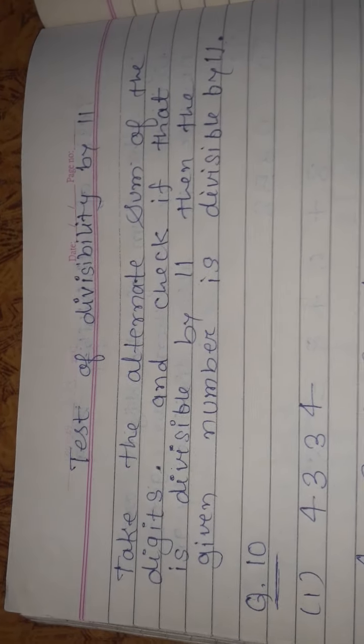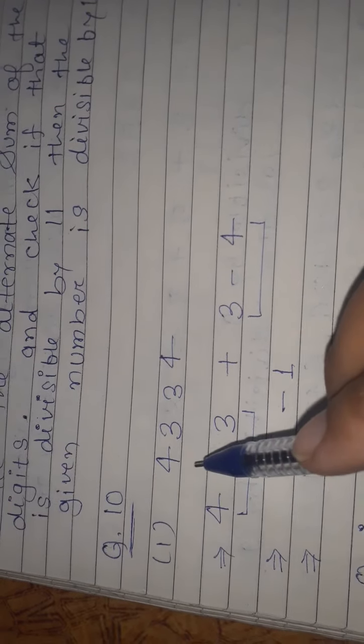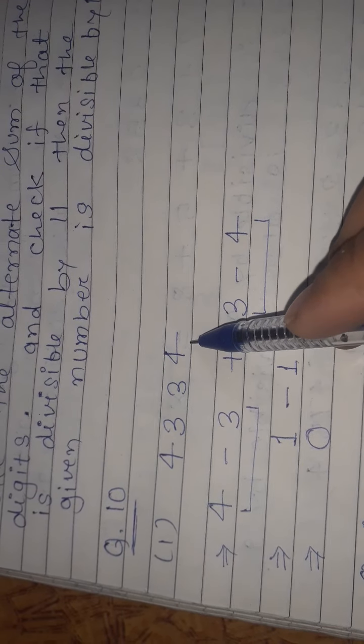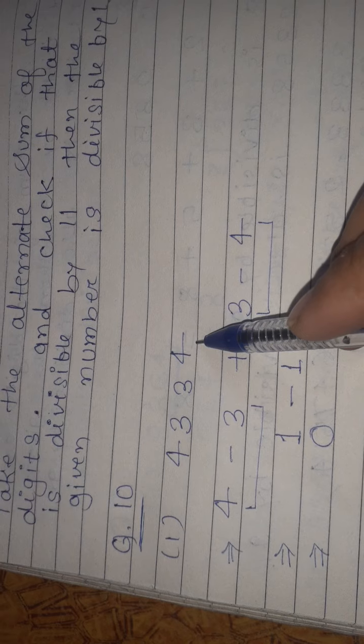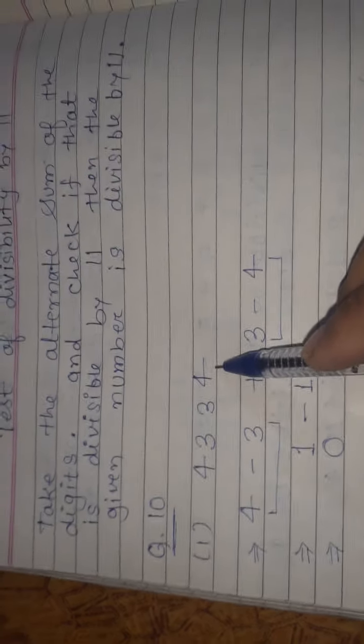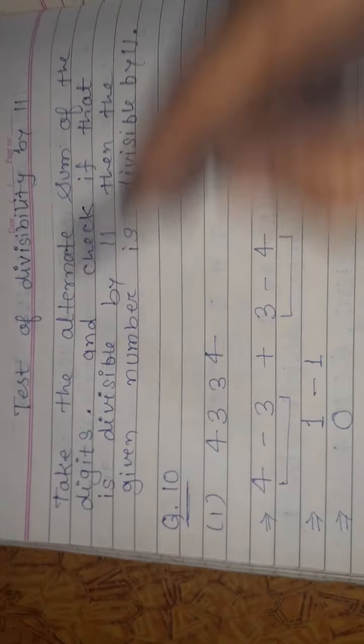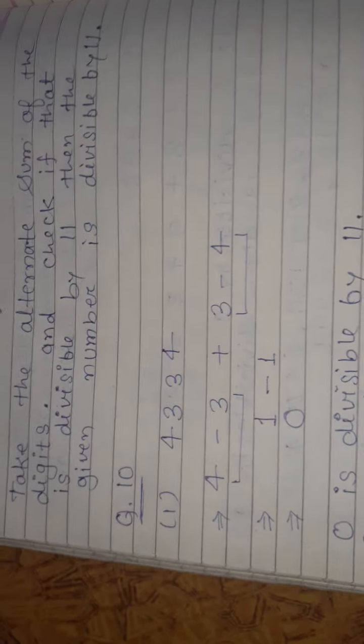Now I will explain the test by an example, question number 10 first. The first question is 4334. In this question we have to check the test of divisibility by 11. So the first step is to take the alternate sum of the digits.